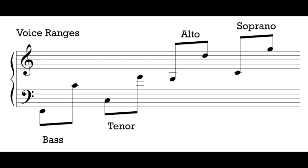If we want to write in these particular parts, we want to be careful about the ranges we use. Our bass voice tends to have a lowest pitch of the E below the bass clef staff and tops out at the C above middle C, C4. Our tenor voice tends to have a lowest pitch of C below middle C, C3, and its highest pitch is that G above middle C, G4. Our alto voice's lowest pitch tends to be that G below middle C, and it can go all the way up to D5 inside the treble clef staff.